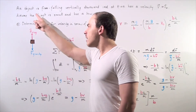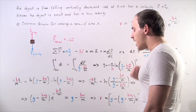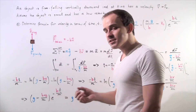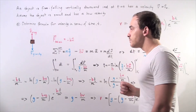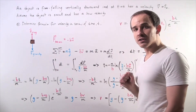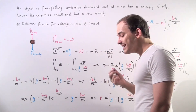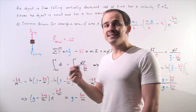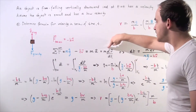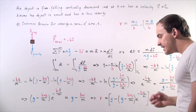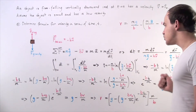We sum up all the forces acting on our object along the y-axis and we get the following equation: the sum of all the forces is equal to the gravitational force m times g minus b times v. Now this equals, according to Newton's second law of motion, m times a. Recall that a, or instantaneous acceleration, is given by taking the derivative of the velocity function, so we can rewrite a as dv divided by dt.